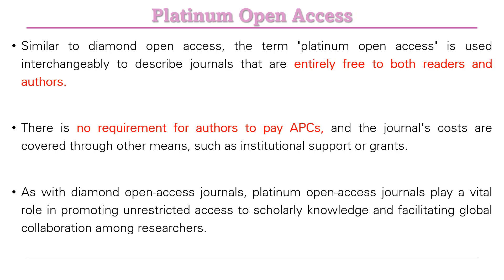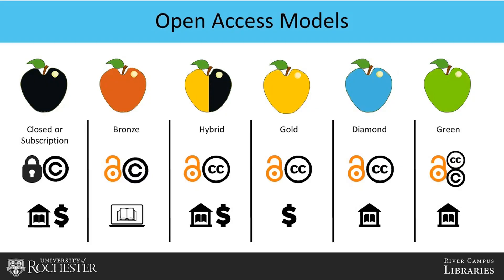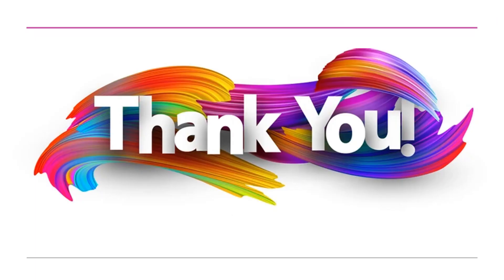These are the six different types of open access journal categories. On journal platforms you can see symbols representing each type — a closed lock indicates a subscription-based journal, while open symbols represent the open access types including bronze, hybrid, gold, diamond, and green. These symbols are typically visible on the journal's homepage. That covers what open access journals are, the different types, and why journals charge APC. If you have any queries, write in the comment box. If you liked the video, press like and subscribe to the channel.